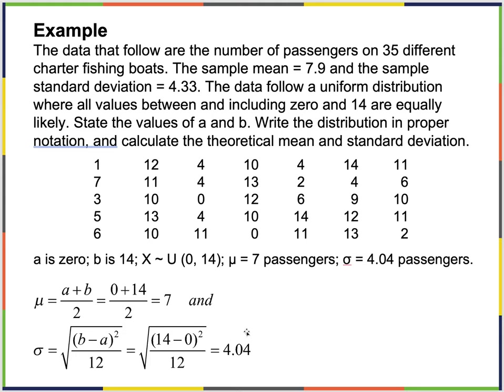Consider the following: the number of passengers on 35 different chartered fishing boats. The sample mean is 7.9 and the sample standard deviation is 4.33. The data follow a uniform distribution where all values including 0 and 14 are equally likely. A is 0, B is 14, so the distribution is written as X ~ Uniform(0, 14).